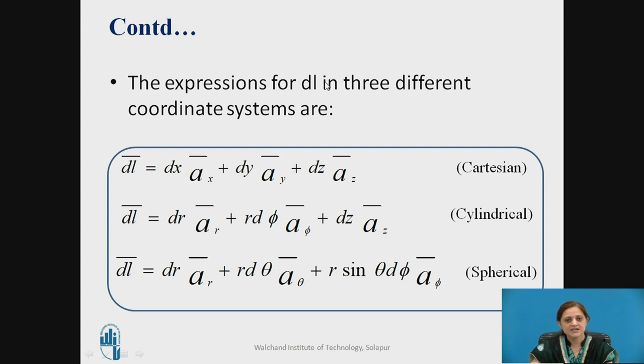This differential length can be represented in three different coordinate systems as given below. As you know that in Cartesian coordinate system the differential length is varied with respect to X, Y, Z coordinates. In cylindrical coordinate system it varies with R, phi and Z and in spherical coordinate system it varies with respect to R, theta, phi.